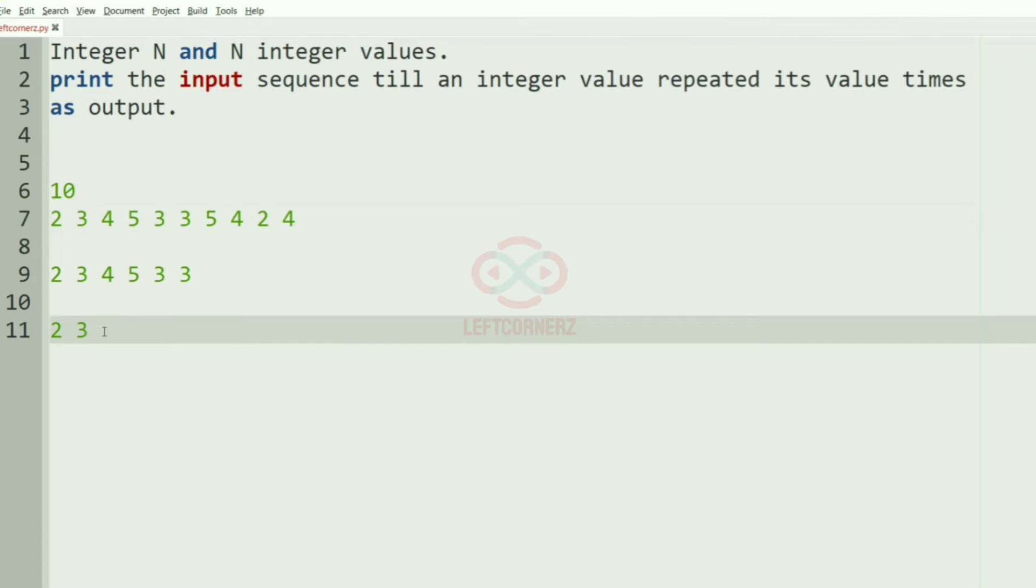And then we have 4 which is occurring for the first time. And then we have 5 which is also occurring for the first time. And then we have 3 which is occurring the second time from the first.